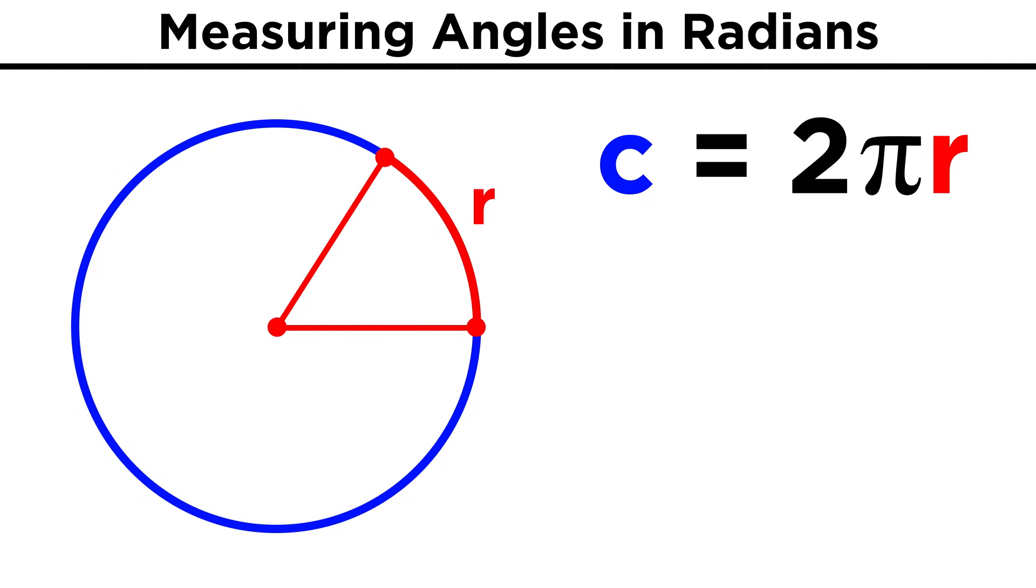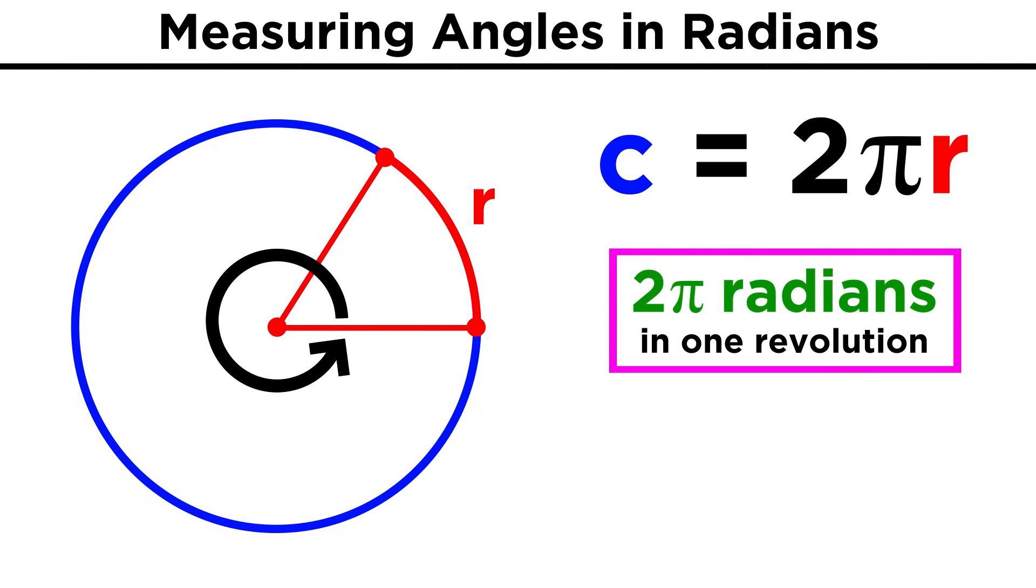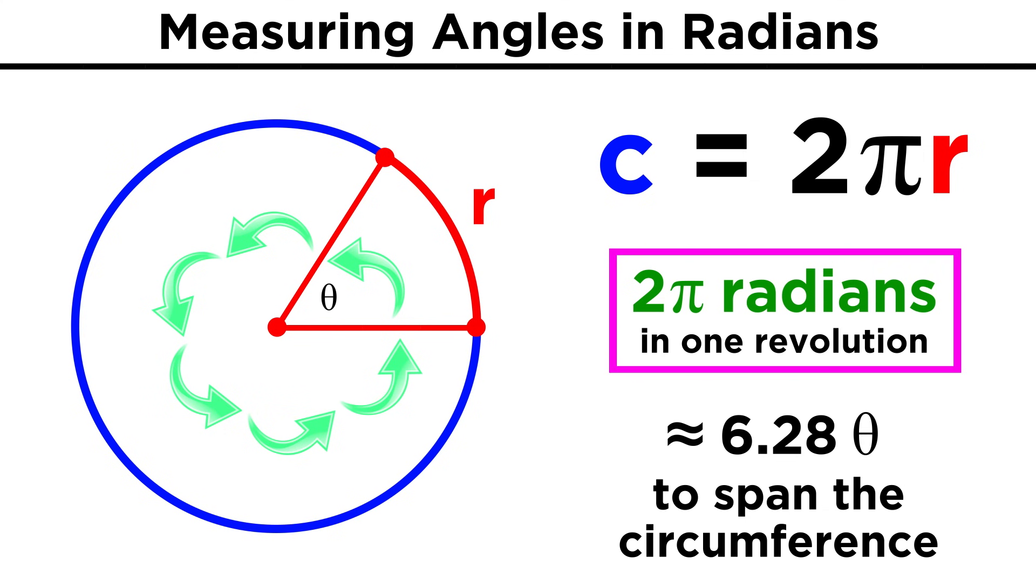Since the entire circumference of the circle is equal to pi times the diameter, or 2πr, then going all the way around the circle must give us 2π radians, since this one radian is equal to a radius, and 2π of these will get us all the way around the circumference.